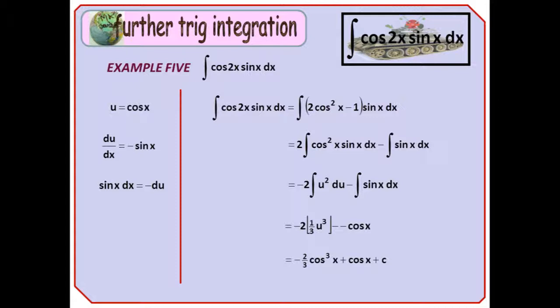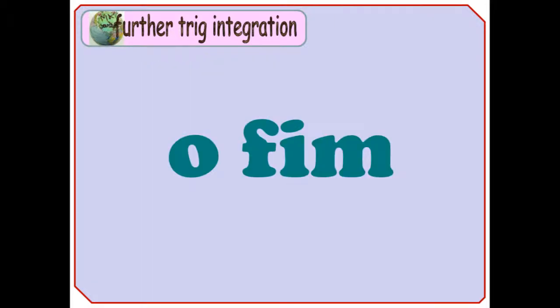So we get the integral of 2 cos squared x minus 1 times sin x, which can be rewritten as 2 times the integral of cos squared x sin x minus the integral of sin x. The second half is easy, but the first half needs our substitution. Cos x is raised to a power, so we use that. And that means that sin x dx is minus du, which simplifies things a lot. The integral of u squared is easy, and our final answer is minus 2 thirds cos cubed x plus cos x plus c.